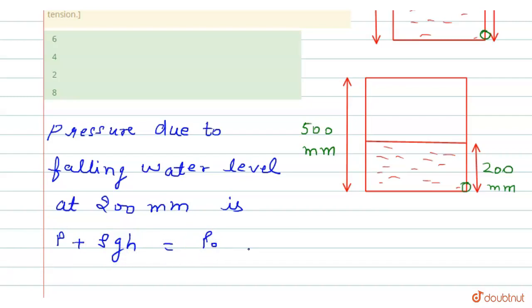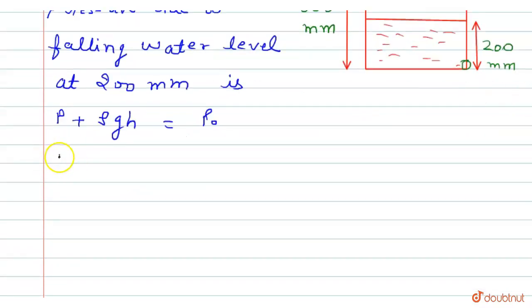From here we can easily find the value of P. This P = 10⁵ - 1000 × 10 × 0.2 which equals 98 × 10³ N/m².